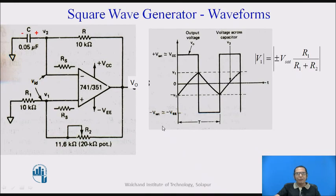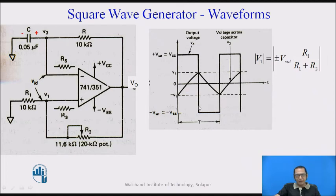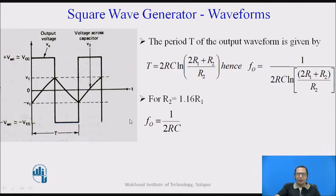Looking at the waveforms, the output V0 switches between plus-Vsat and minus-Vsat. The voltage across the capacitor rises towards plus-Vsat when the output is plus-Vsat, and goes towards minus-Vsat when the output is minus-Vsat. If we take the output at V0, that output is nothing but a square wave. This is a very simple way to generate a square wave.